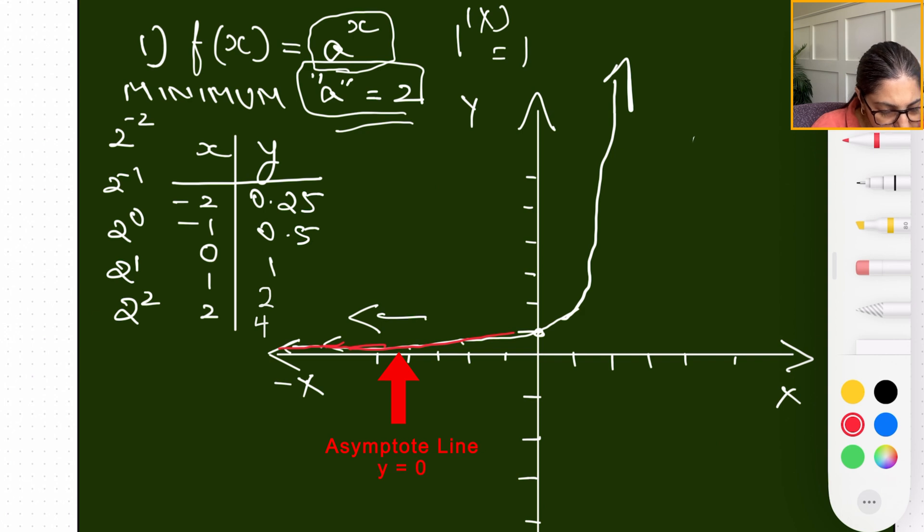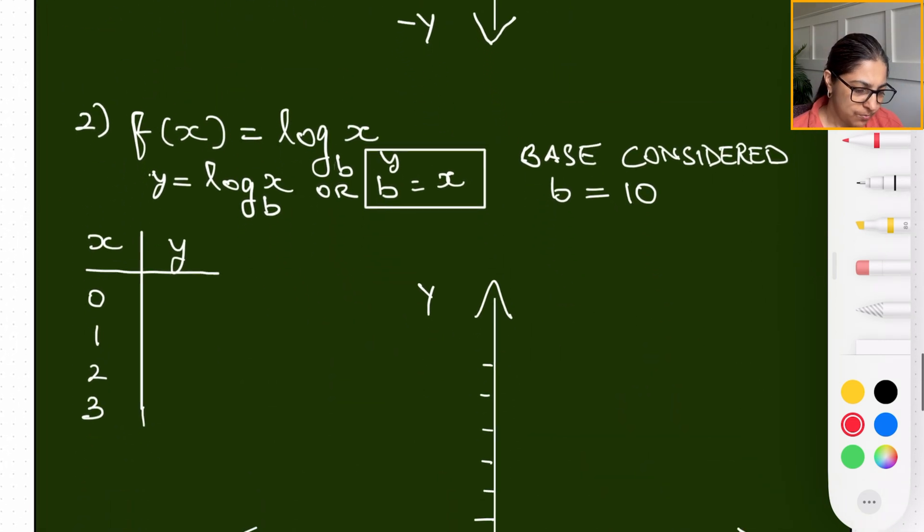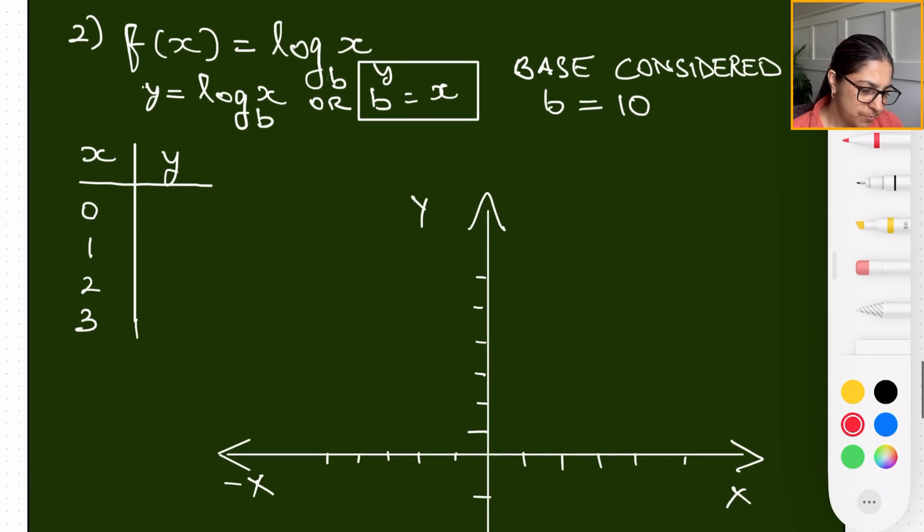It keeps approaching, glides over on top of the x-axis but never overlaps it, never touches it. These will be the asymptote lines, which is a concept we are going to learn in forthcoming videos. But for now this is the parent shape of what we call an exponential function.